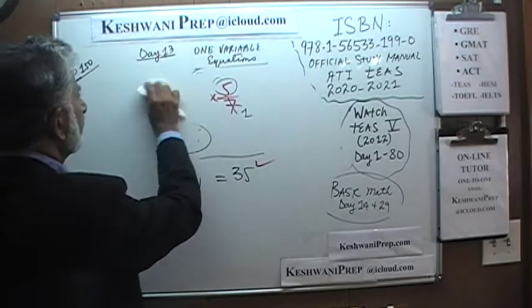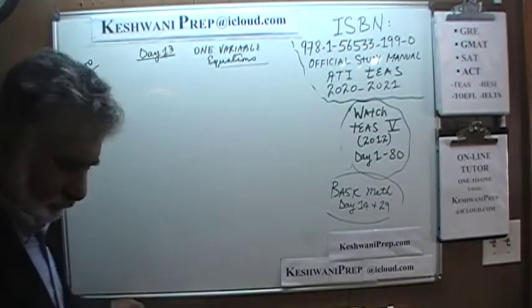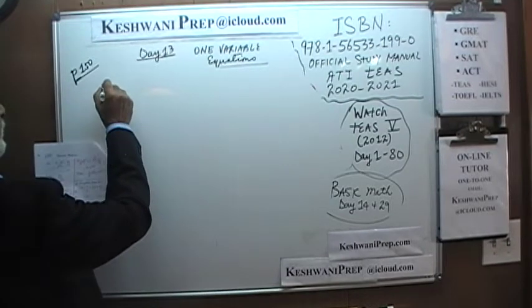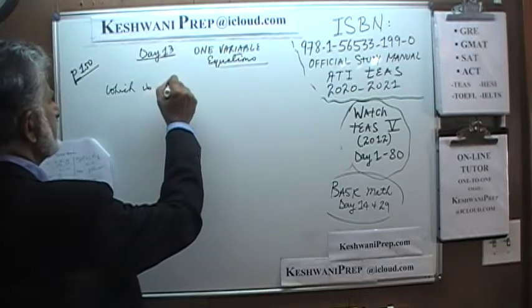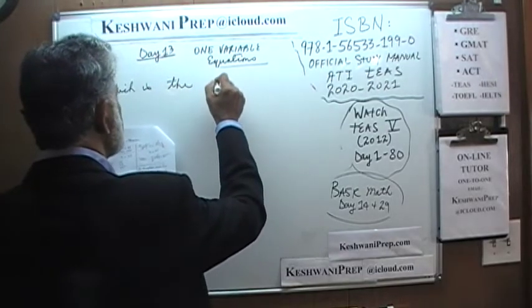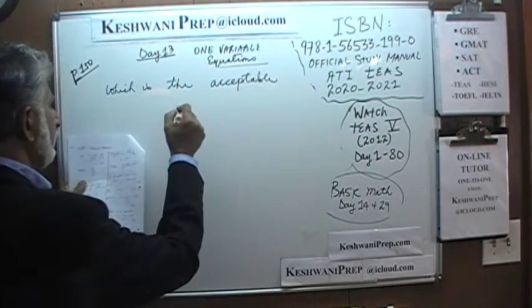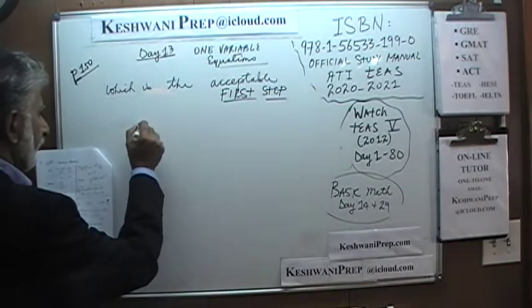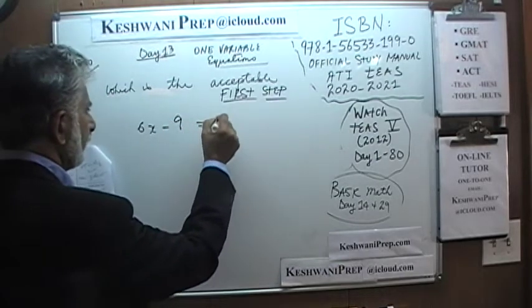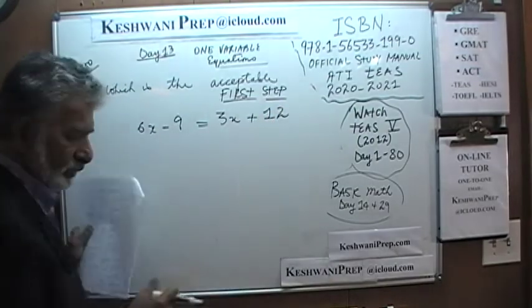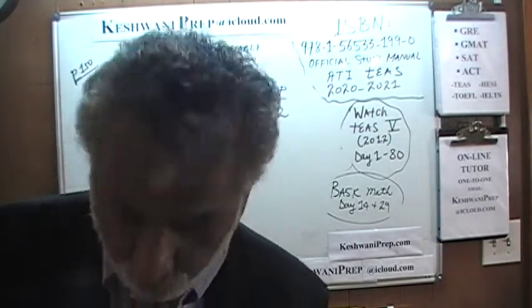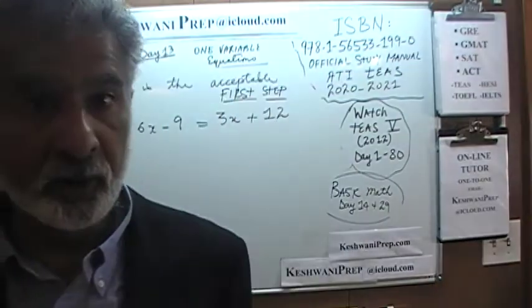Let's do the last one, number five. The equation given is 6x minus 9 equals 3x plus 12. The question asks which is an acceptable first step. I'm going to walk you through all the answer choices to show you why the other three are not acceptable, instead of simply telling you the right answer.